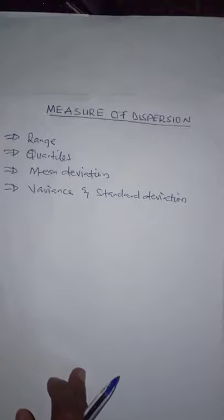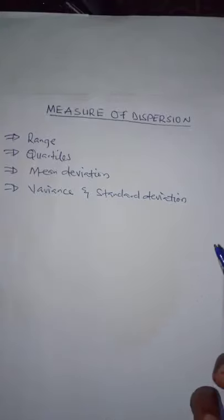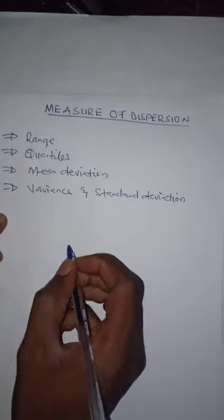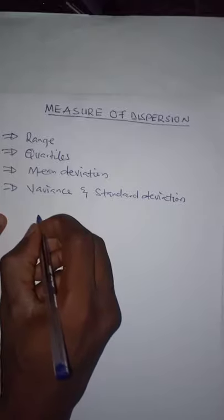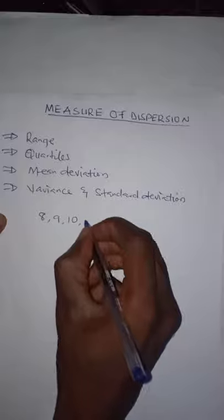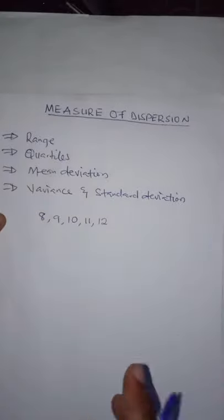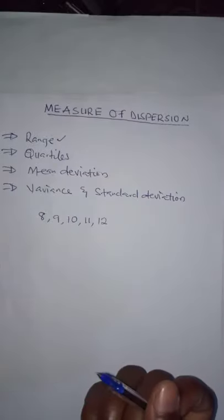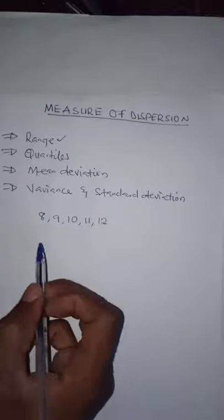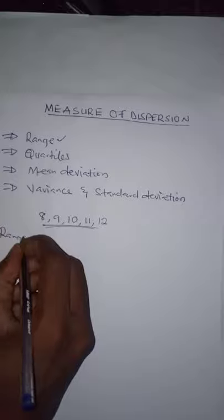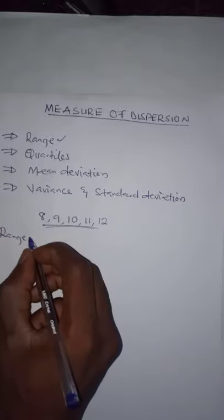In this tutorial, I am going to restrict the discussion to mean deviation, variance, and standard deviation. First, we have a data set: 8, 9, 10, 11, and 12. For range, range is the difference between the least value and the highest value. So in this set of data, the range is found by taking the difference of 12 and 8.